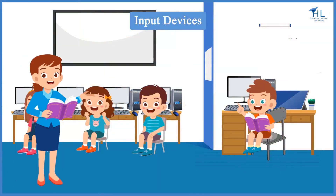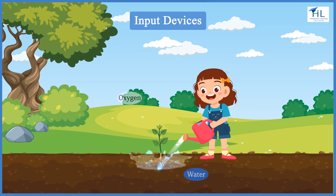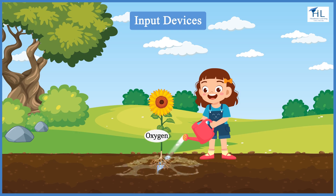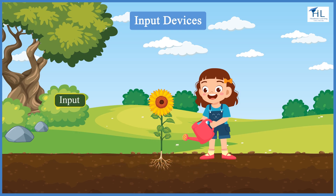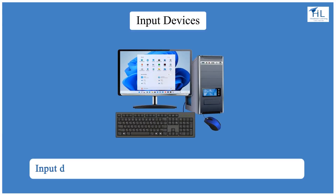Today, I will talk about input devices. Let me explain input by an example. The plant intakes water and oxygen. Taking in is called input, so water and oxygen are inputs for the plant. Input devices allow us to give information and data to the computer.